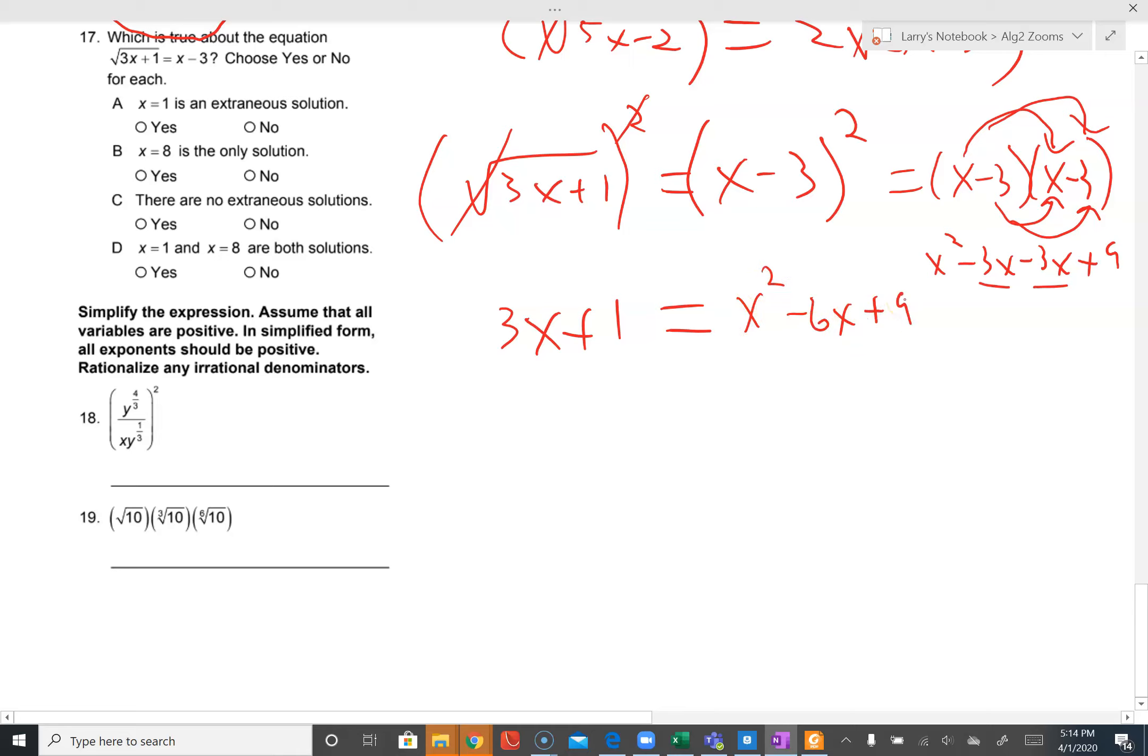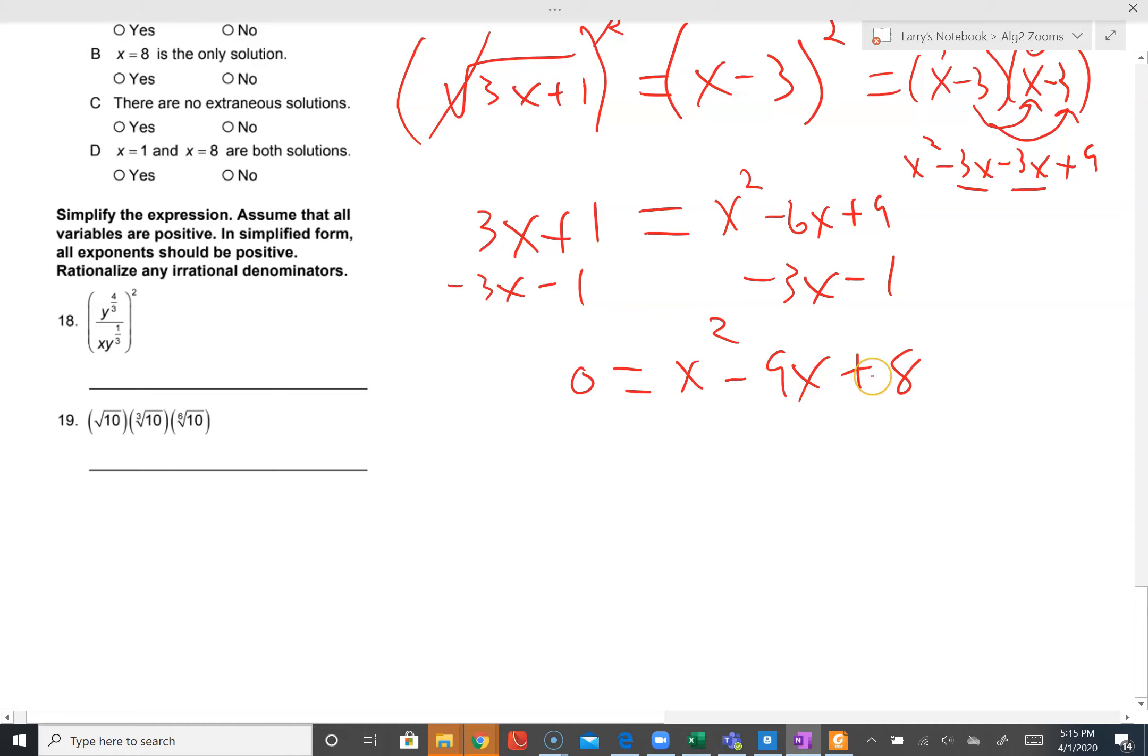This is a quadratic. We have a lot of ways to solve quadratics, but many involve setting the equation equal to zero. So I'm going to subtract three x and subtract one. We get zero on the left, x squared minus nine x plus eight. This one's factorable. X times x is x squared, plus here means two minuses, eight is eight and one. Negative eight x and negative one x is minus nine x, negative eight times negative one is plus eight.